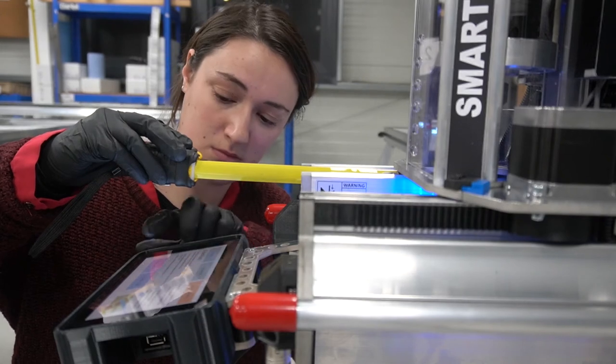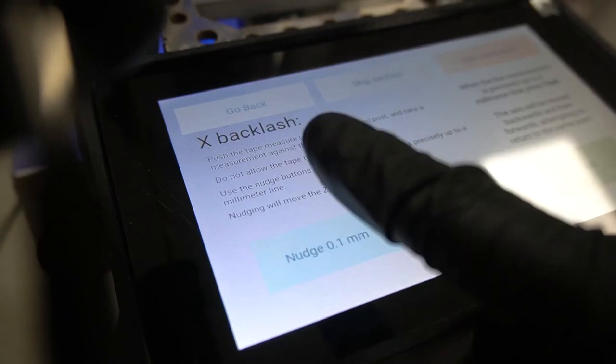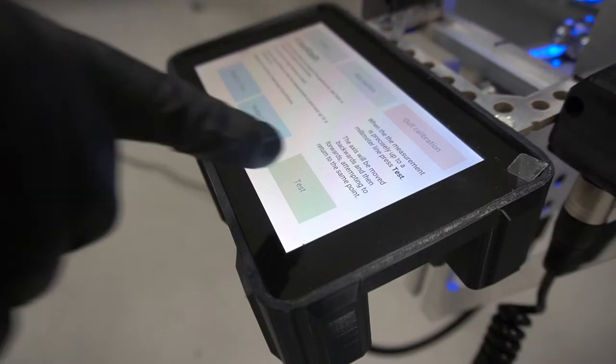Use the nudge button so that the measurement is precisely up to a millimeter line. Make a note, then press test.